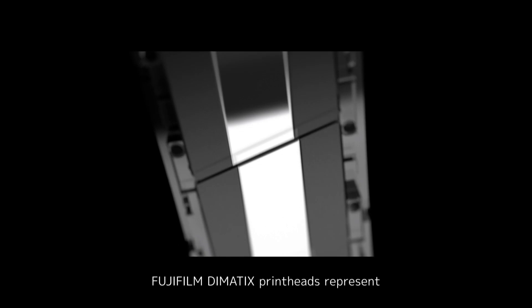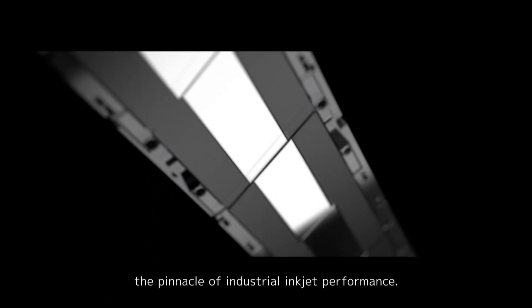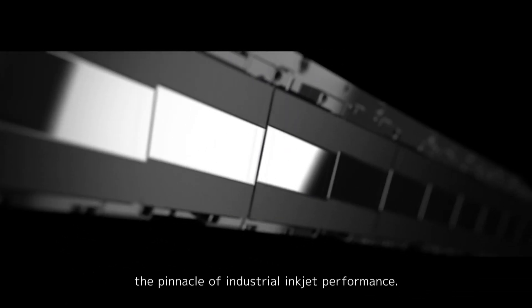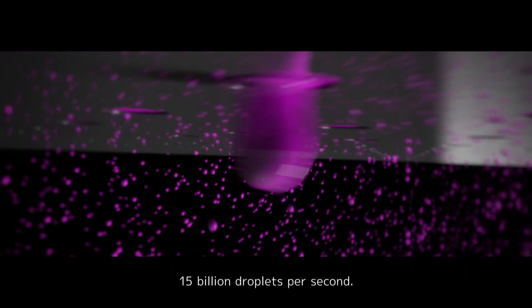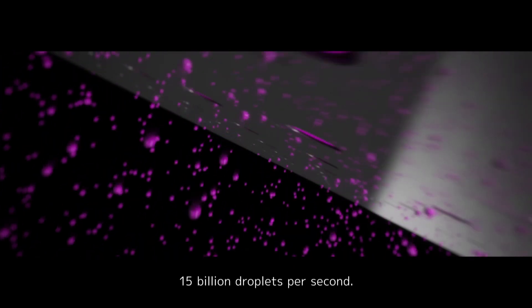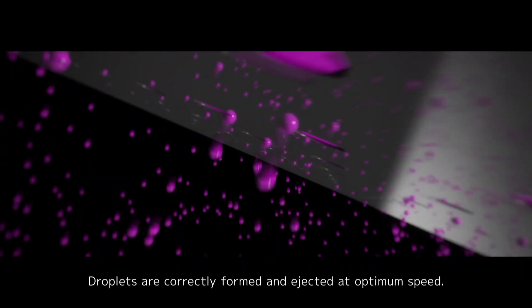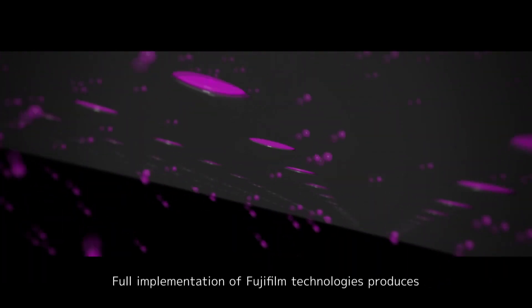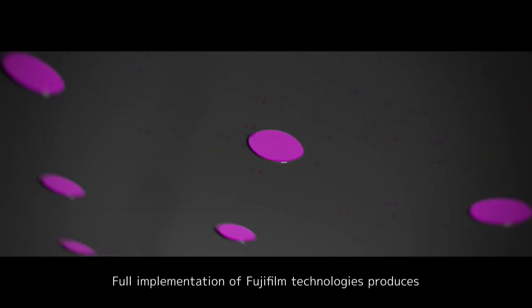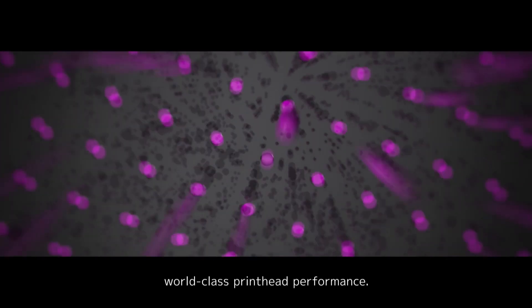Fujifilm Dymatic's print heads represent the pinnacle of industrial inkjet performance. Precise jetting control can place up to 15 billion droplets per second. Droplets are correctly formed and ejected at optimum speed. Full implementation of Fujifilm technologies produces world-class print head performance.